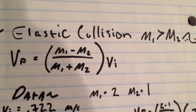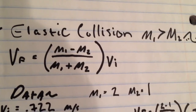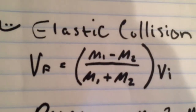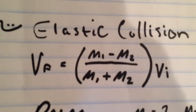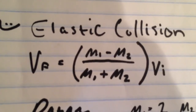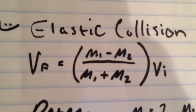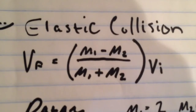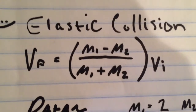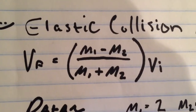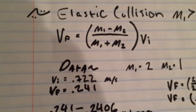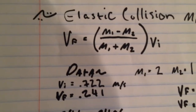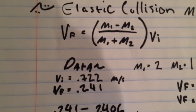In an elastic collision where one mass is greater than the other, the velocity final is equal to the mass of one object minus the mass of the other over the sum of the two masses, all multiplied by the velocity initial. In other words, the velocity final is going to be one-third of the velocity initial.